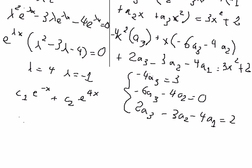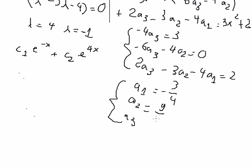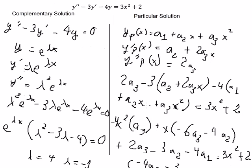Solving this system of equations gives us: A3 equals negative three over four, A2 equals nine over eight, and A1 equals negative fifty-five over thirty-two.